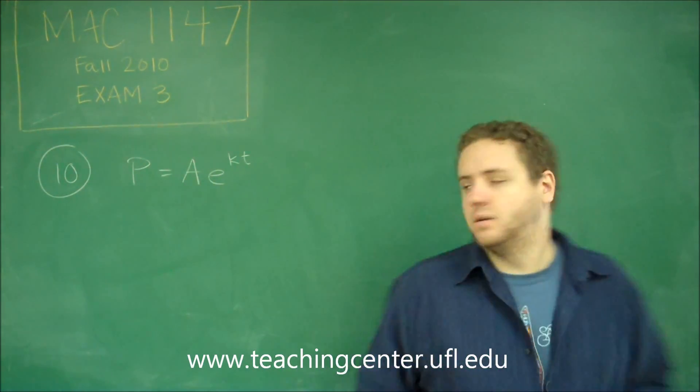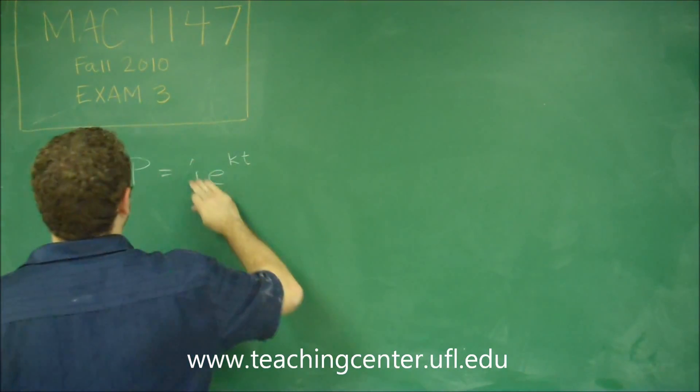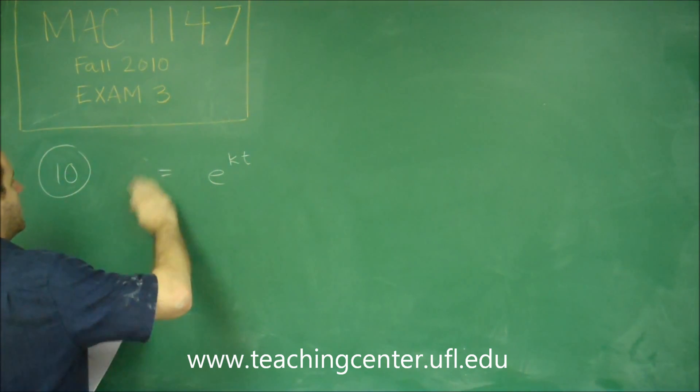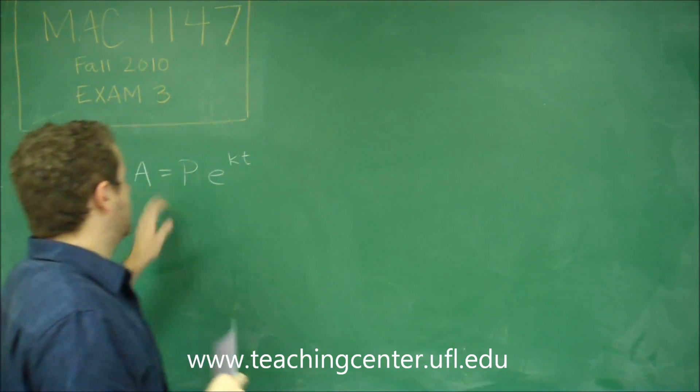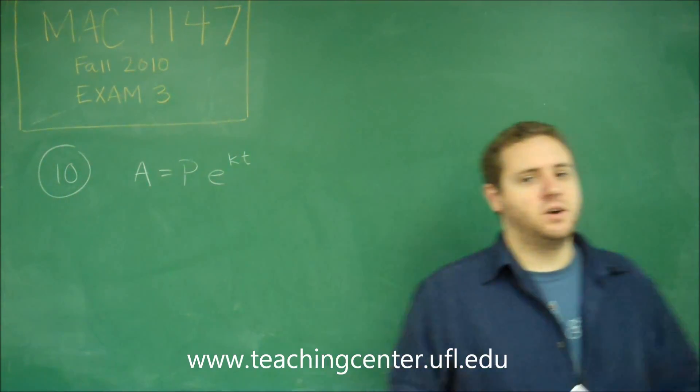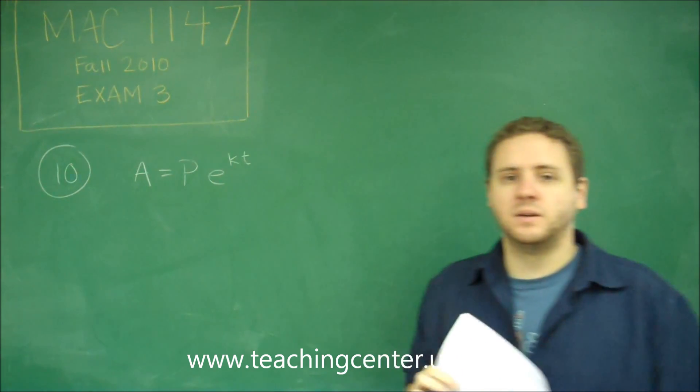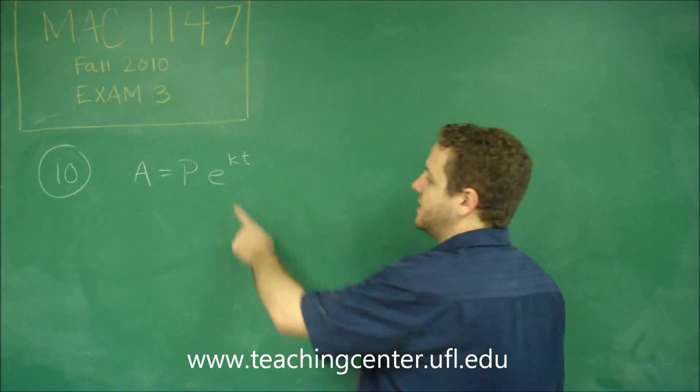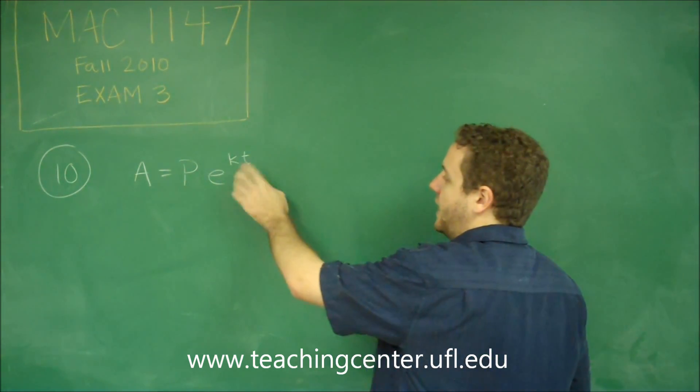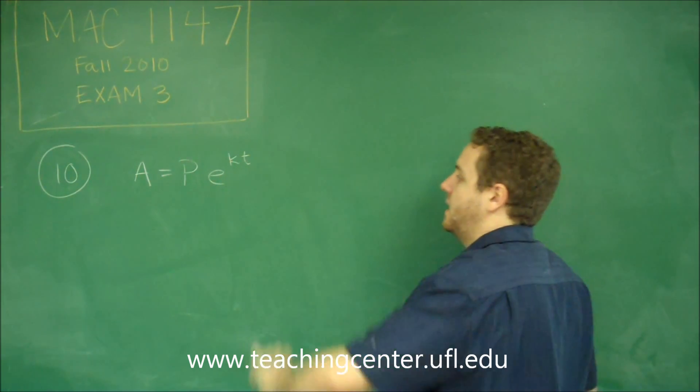Remember that your exponential growth formula is going to be A equals P times E to the KT. So P is your principal, your starting amount. A is your accumulated amount or your final amount. And then E to the KT is your exponentiation constant times the time.